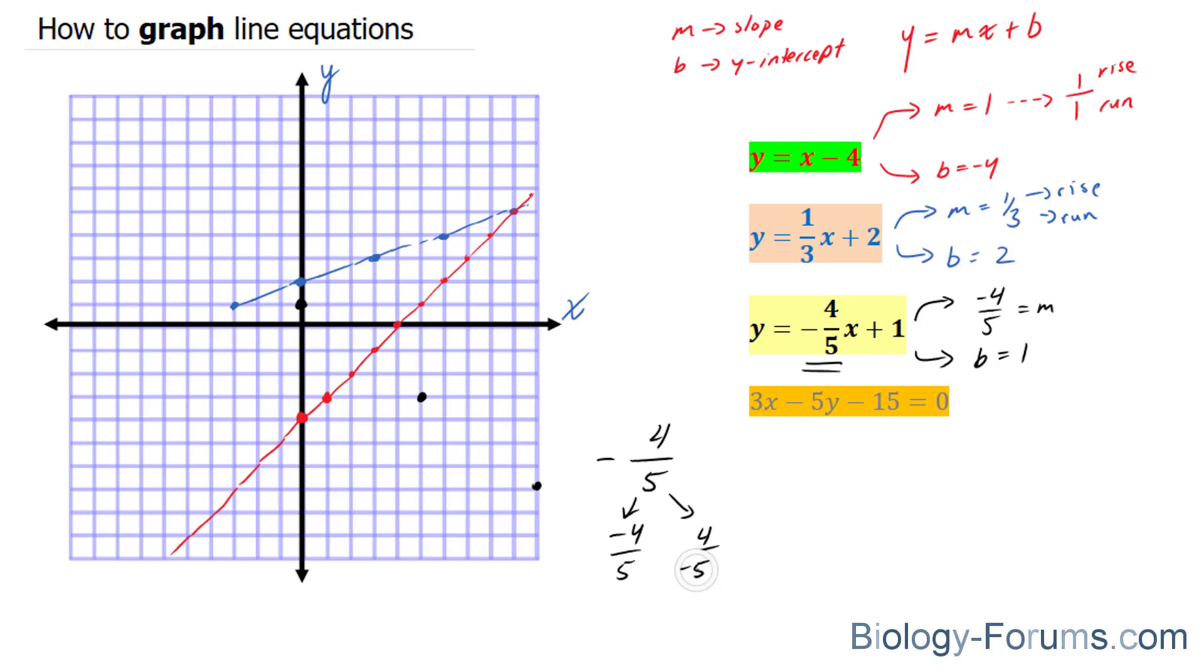If you do give that negative to the 5, and you start off at your y-intercept, you can go up positive 4, and then to the left, negative 5. Just keep that in mind, that is also okay. I'm going to connect these points.